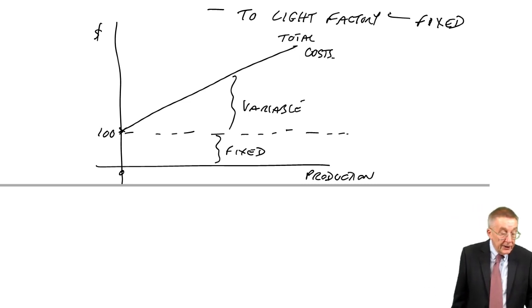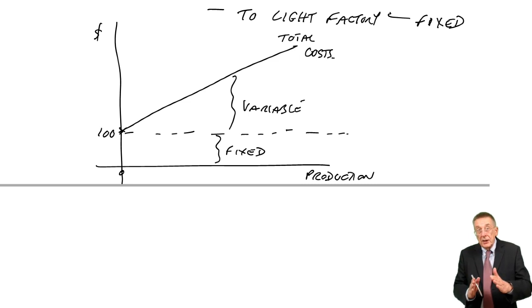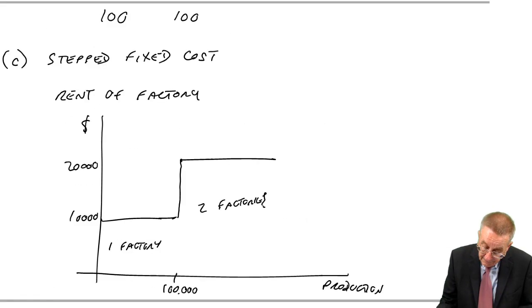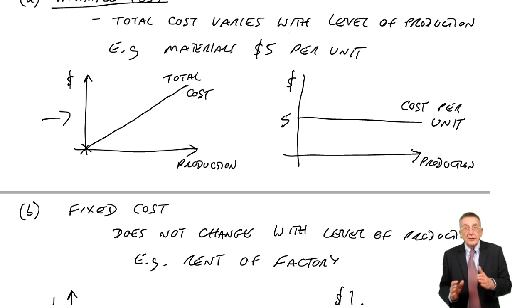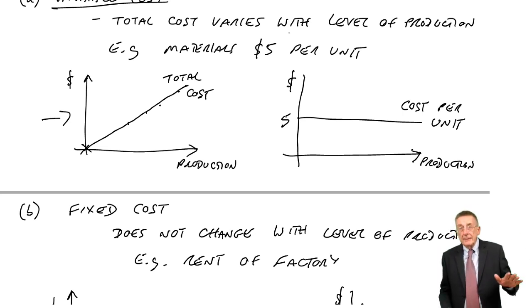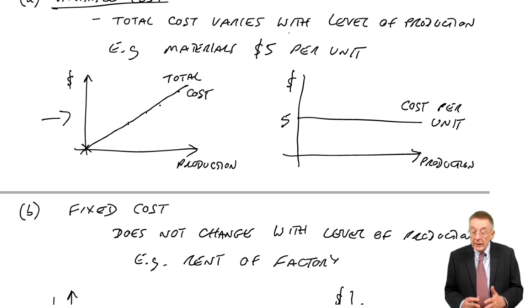I've written linear assumption. I did mention this earlier, that we do assume that the variable cost goes up in a straight line. Think back to materials. If every unit is $5, then more units, more $5. It would be linear. In real life it needn't be for several reasons. But for paper F2, we will make that assumption.